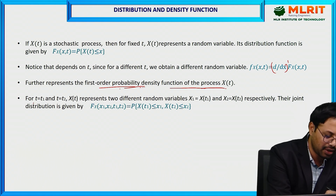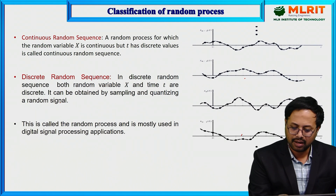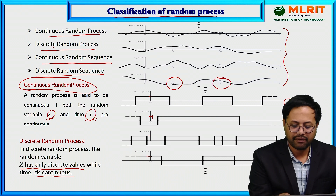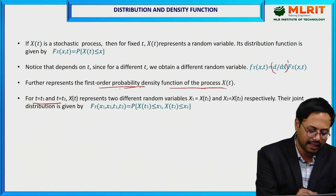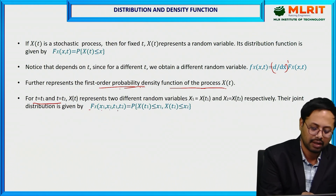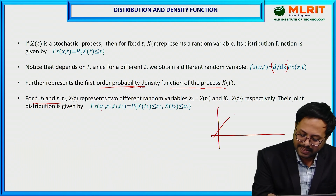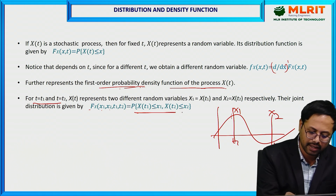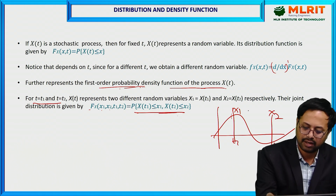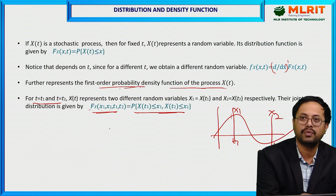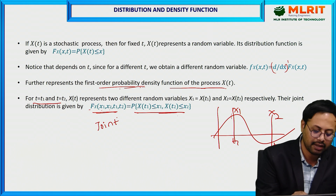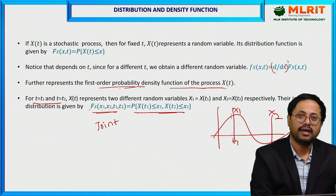Similarly, for two different time instances t1 and t2, you get the joint distribution function F_X(x1, x2; t1, t2). At time t1 the process behaves as x1, and at t2 it behaves as x2. Whenever you have two variables, we call this the joint distribution function. This is defined for two different time instances.